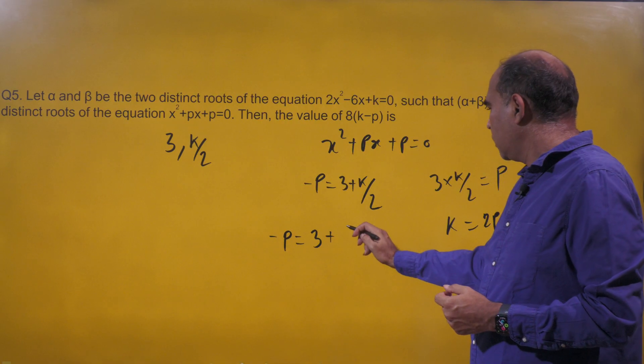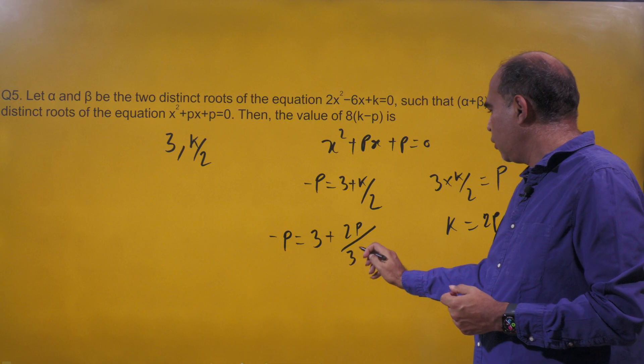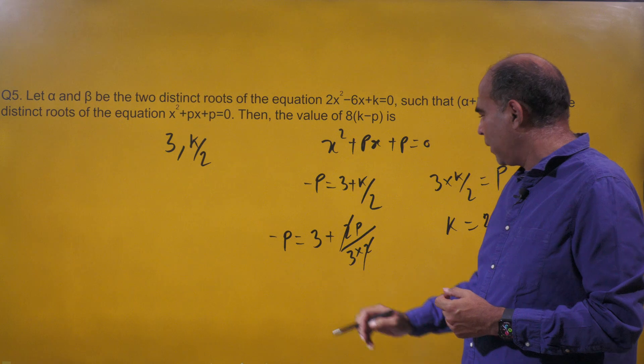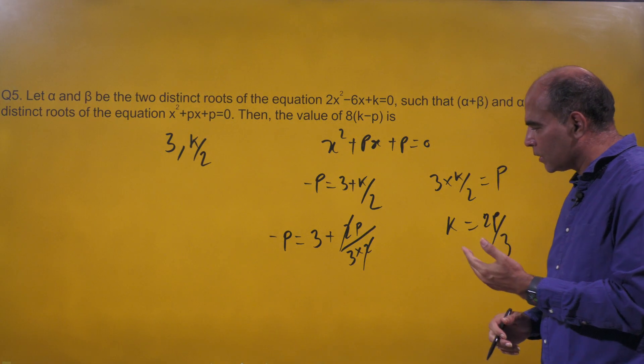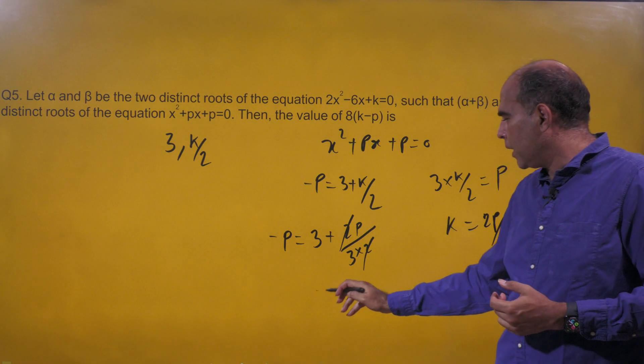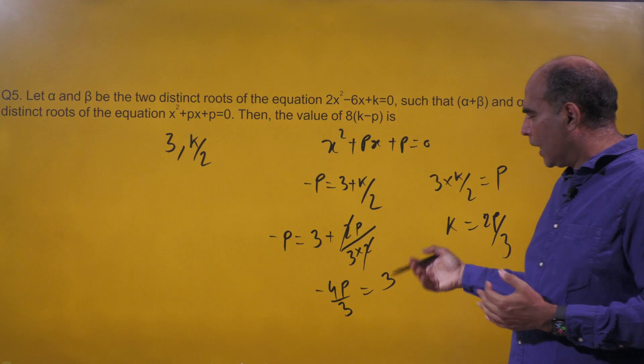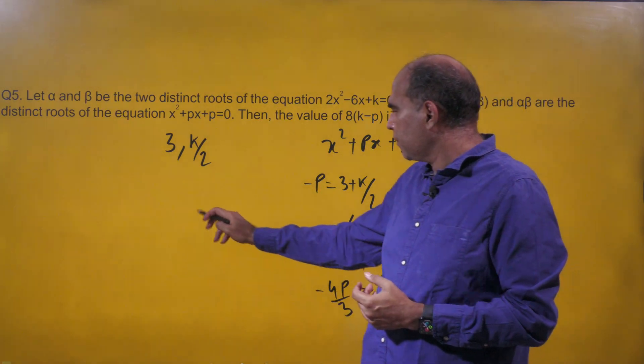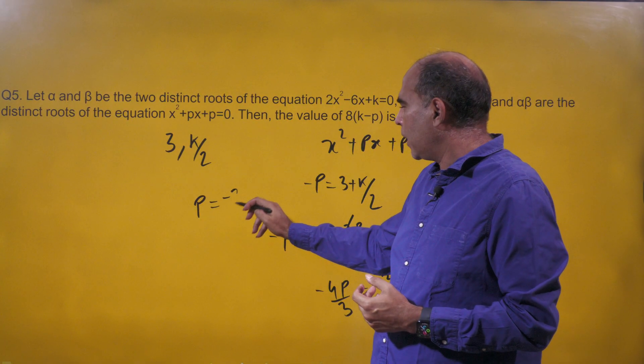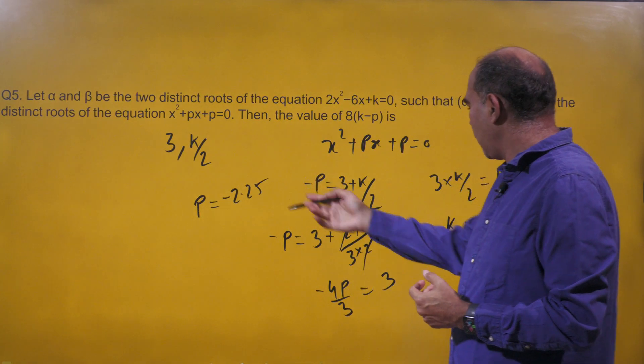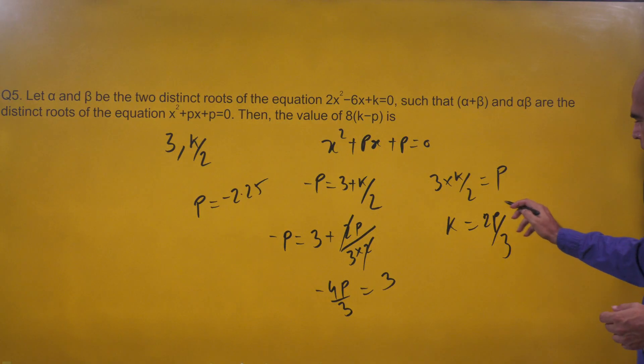I get -p = 3 + 2p/3 × 1/2. Of course, you have to have the practice to make sure you don't make any errors while doing this, which then gives you -4p/3 = 3, and that gives you p = -9/4, which is -2.25. Once you have p as -2.25 and insert it here, you'll get k = -1.5.